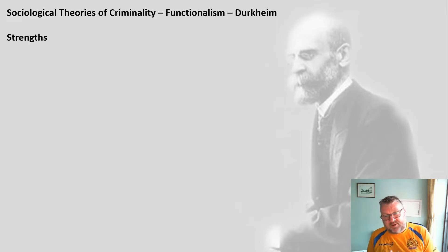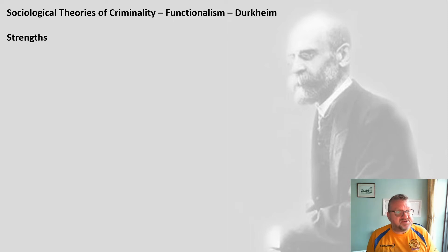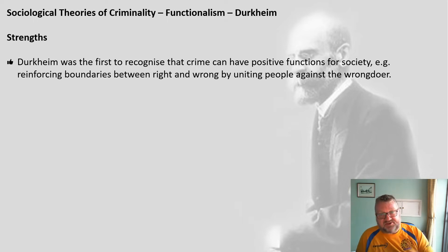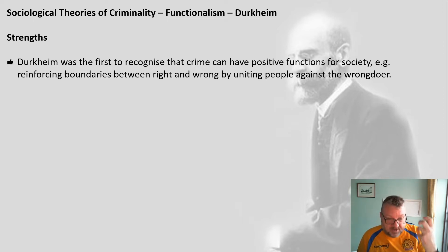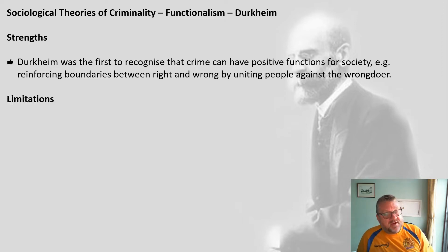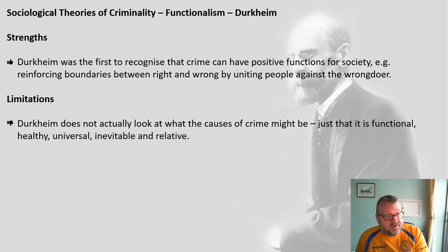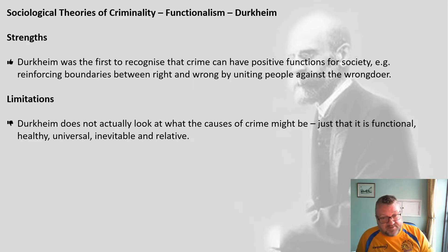If we evaluate Durkheim, the strengths of his theory are that he's the first to recognise that crime can have a positive function for society, such as reinforcing boundaries between right and wrong and uniting people against the wrongdoer. But there are limitations — he doesn't actually look at the causes of crime, just that it's functional, healthy, universal, inevitable and relative.